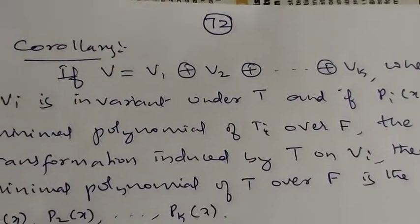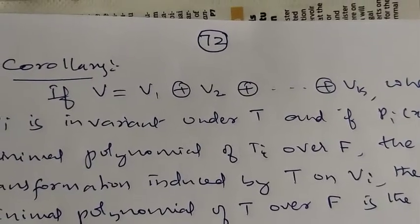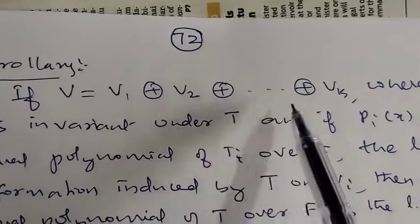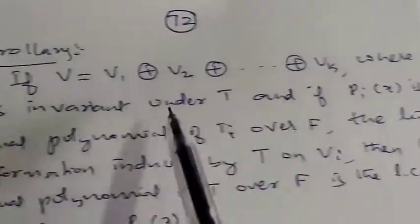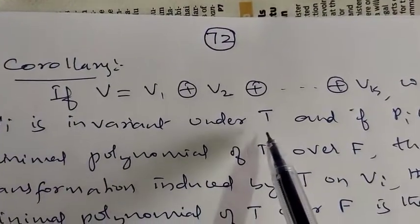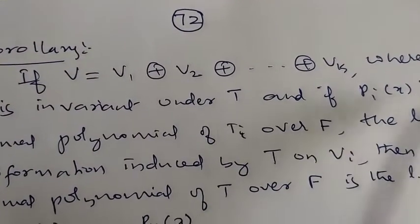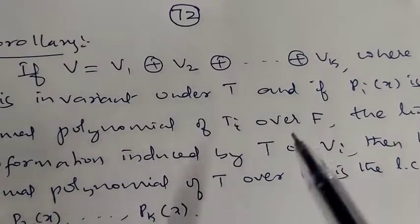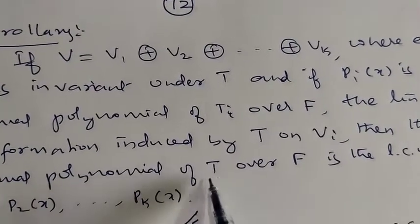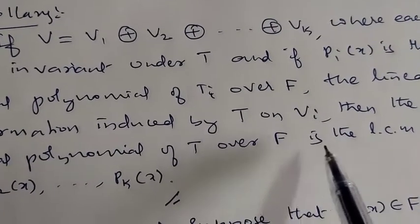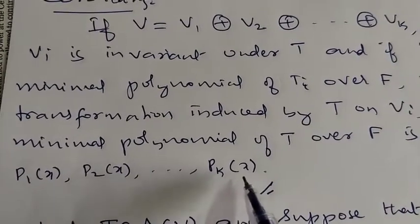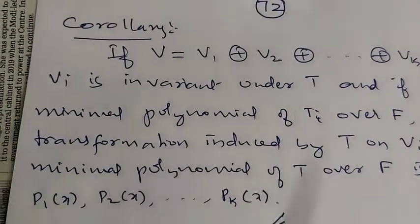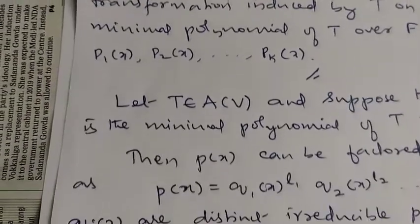This result can be extended to any number of subspaces. If V is the direct sum of V1, V2, ..., Vk where each Vi is invariant under T, and Pi(x) is the minimal polynomial of Ti, then the minimal polynomial of T over F is the LCM of P1(x), P2(x), ..., Pk(x).